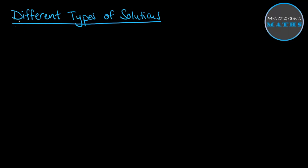Hello, and welcome back to Mrs. O'Gramm's Maths. In the last video, we looked at how to solve systems of equations algebraically where there was one unique solution. We're going to look at what happens when you don't get to having a unique solution.